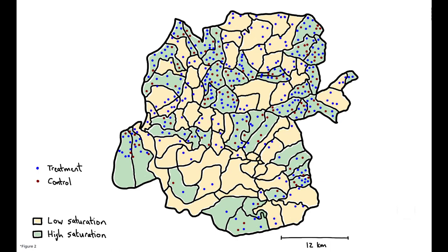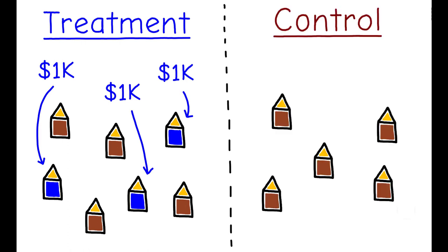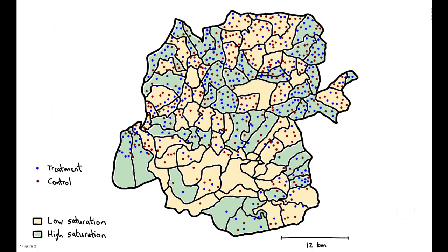There, a third of villages were treatment and two-thirds were control. Finally, within each treatment village, all eligible households received the transfer, while no households in control villages did. This design allows the authors to use geographic variation and exposure to the transfers.